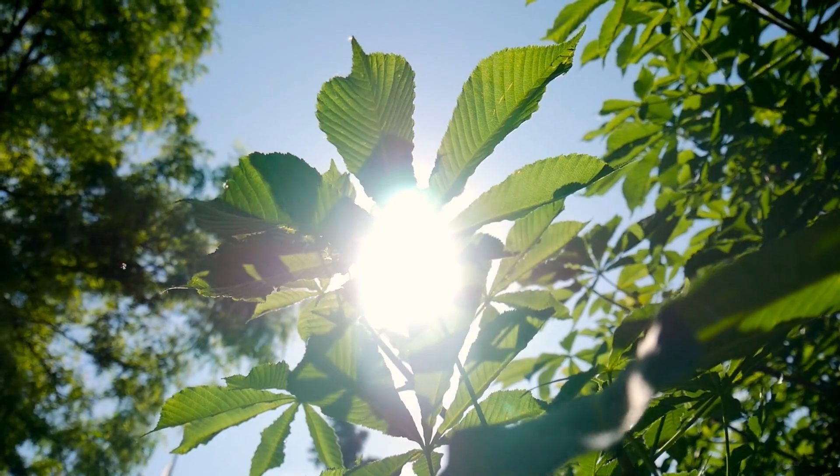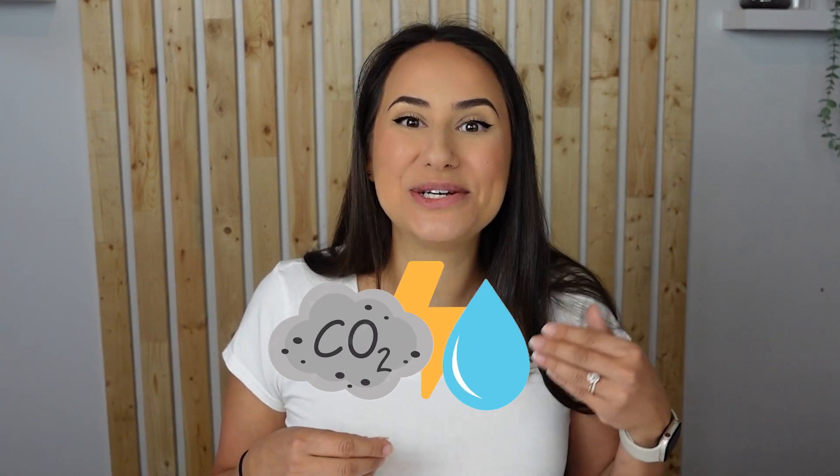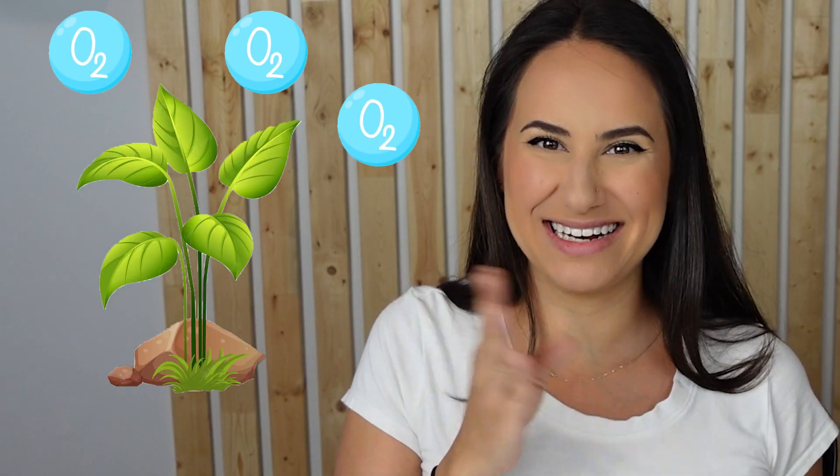As sunlight hits the surface of these leaves, these tiny green chloroplasts get really excited. What they do is capture this energy and use it for the process of photosynthesis. This sunlight energy helps to transform that water and carbon dioxide into sugar and oxygen. The sugar is food for the plant, whereas the oxygen is the waste of the plant.